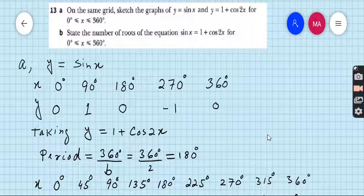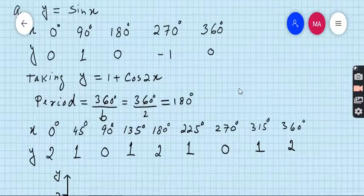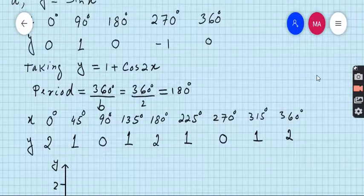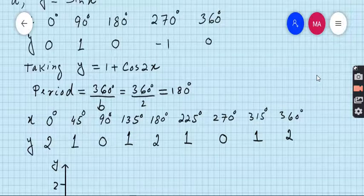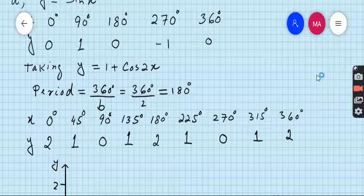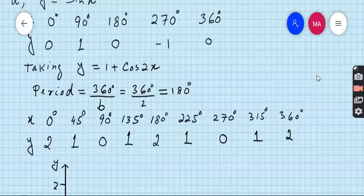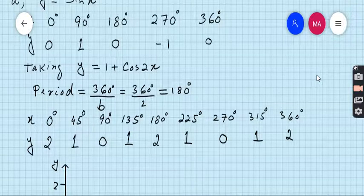Because y = 1 + cos 2x is not the simplest trigonometric function, we must find its period. The formula for the period of cosine or sine is 360 degrees divided by b, where b is the coefficient of x in the given trigonometric equation. In this equation the coefficient of x is 2, therefore the period is 360 ÷ 2.